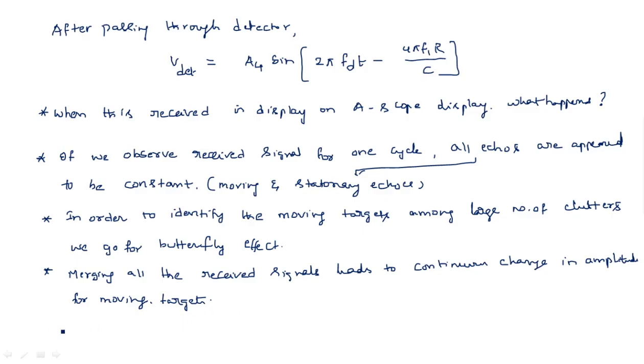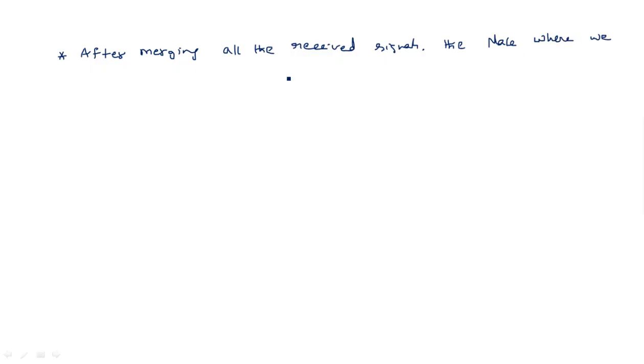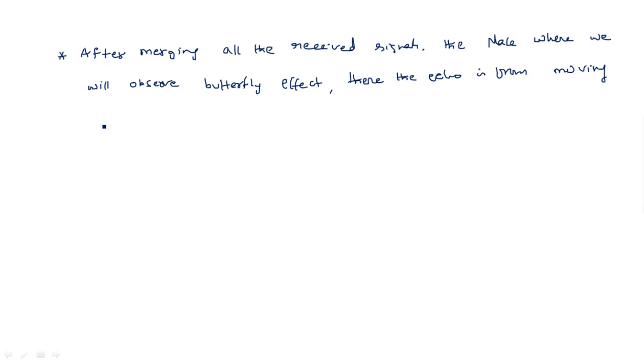After merging all received signals, wherever we observe the butterfly effect, that indicates the presence of a moving target. The butterfly effect occurs because the moving target's position keeps changing.